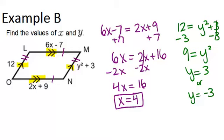However, if we think about the context of this problem, it doesn't really make sense for Y to equal negative 3, because if we think over here, how could you have a length that would be negative? So I would say the answer is just Y equals 3. So our two answers are X equals 4, and Y equals 3.